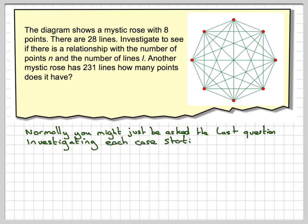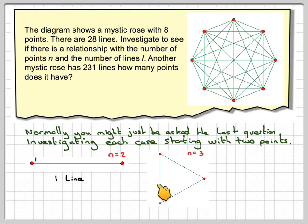So, investigating each case, starting with N equals 2, two points. We've just got one line, so we've got one line joining that. We don't count it twice, so the number of lines there is one. When we've got three, three points here. N is three.